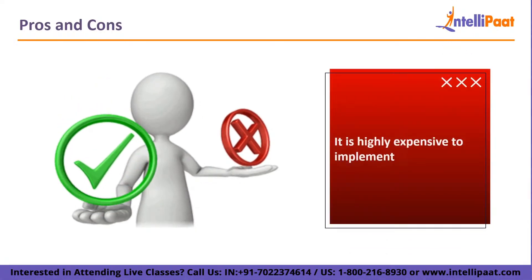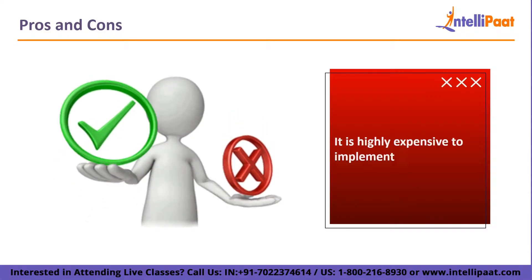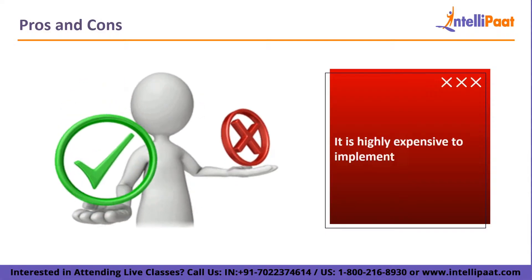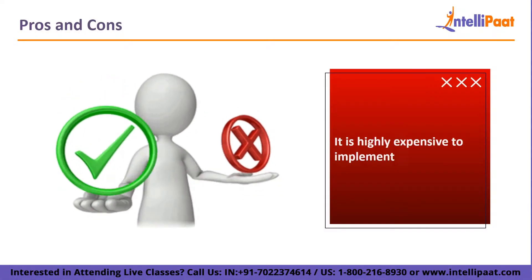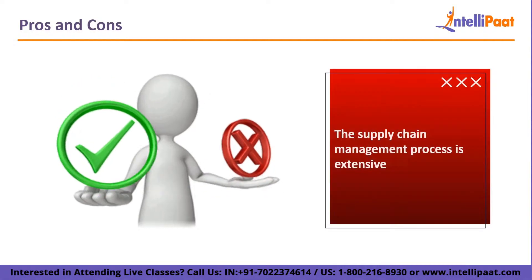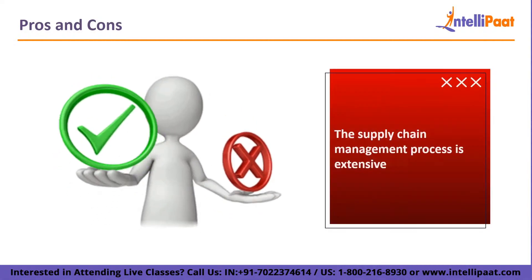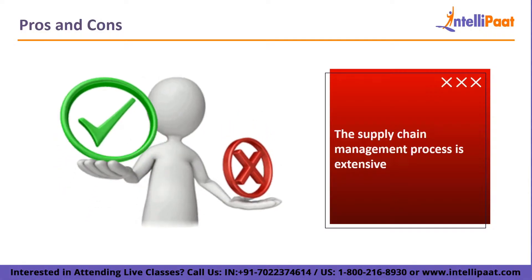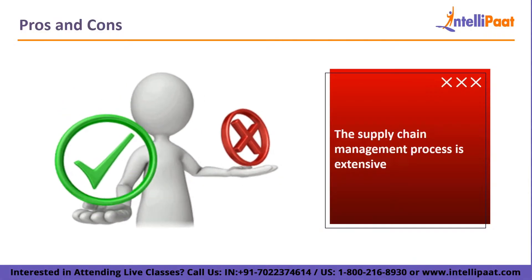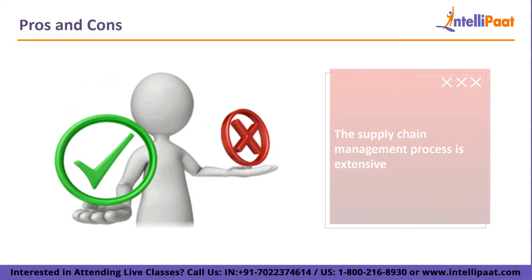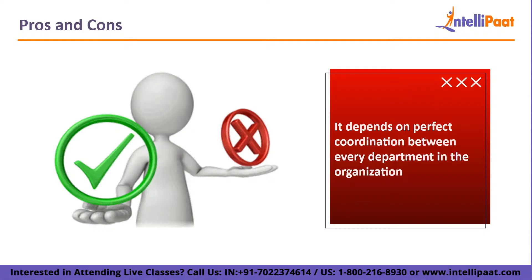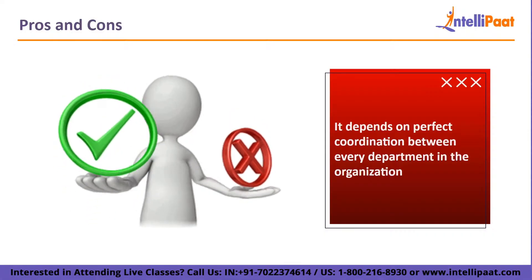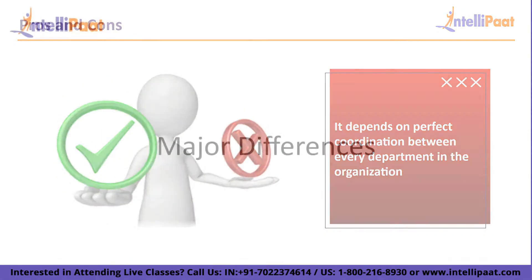The cons of SCM: Supply chain management is highly expensive to implement — small businesses are unable to afford the large time, financial, and other resource commitments that are necessary. Because it involves numerous corporate departments, the SCM process is extensive and can occasionally be difficult, making workers and employees feel uneasy and demotivated. The biggest problem with SCM is that it depends on perfect coordination between every department in the organization; otherwise the system would fail.